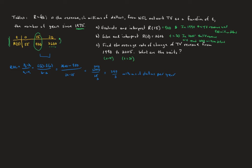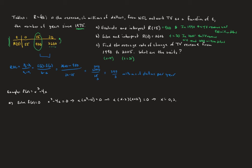Let's bring in some other kinds of problems. Let's say f of x equals x cubed minus 4x. First, solve where f of x equals 0. We set that equal to 0 and factor out a greatest common factor, giving us x times x squared minus 4. We recognize x squared minus 4 as the difference of two squares, factor that, and set each factor equal to 0. We get x equals 0, 2, and negative 2.